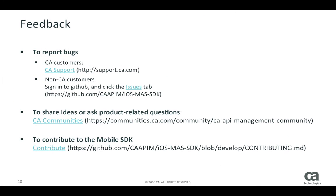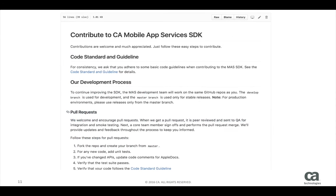To contribute to the mobile SDK, go to CA APIM in GitHub. Time to start coding. We hope your first experience with the mobile SDK is an easy one.